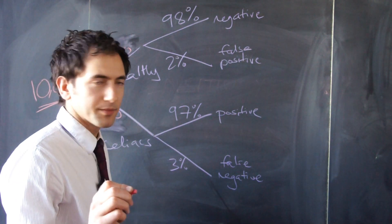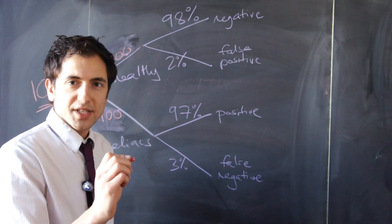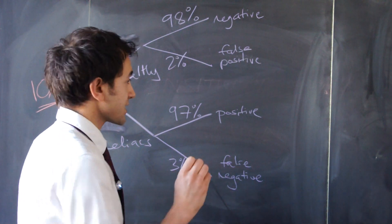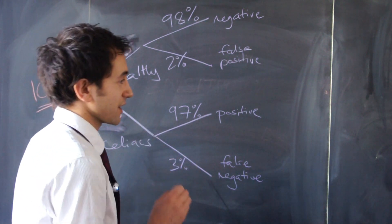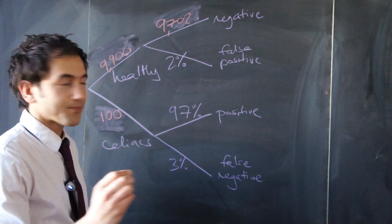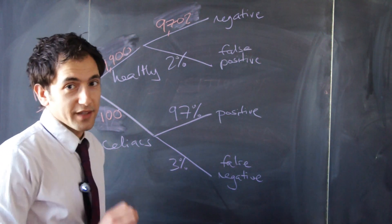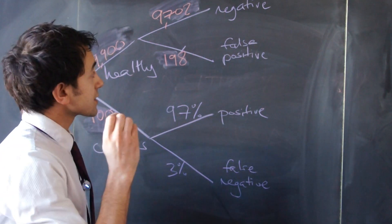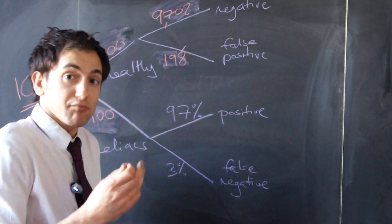Let's start with the healthy people. 98% of them would have a negative test result. 98% of 9,900 is 9,702. 2% of 9,900 is 198. So we'd predict 198 false positives.